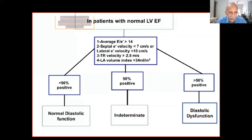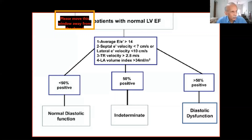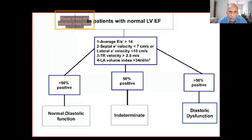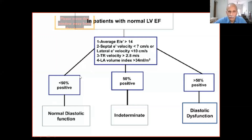This is another reason why patients' weight and height should be measured when they come into the clinic — you need to correct the size to body surface area. LA volume index greater than 34 ml/m² is abnormal. If three out of four parameters are abnormal, then you have diastolic dysfunction. If three out of four are normal, then you have normal diastolic function. In between, if you have only one abnormal, you are indeterminate.